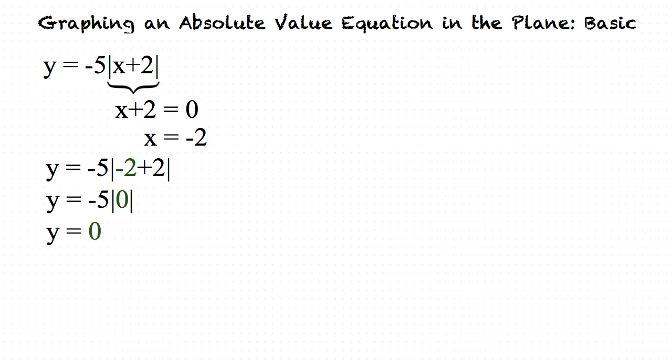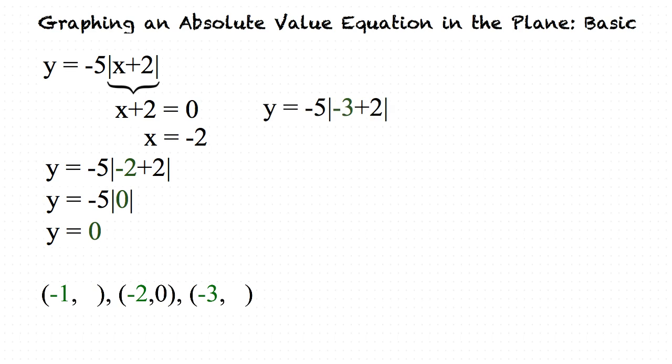We then only need to find one point to the left of the vertex and one to the right in order to complete graphing the equation. Since our vertex is at negative 2, we can choose the points negative 3 and negative 1.